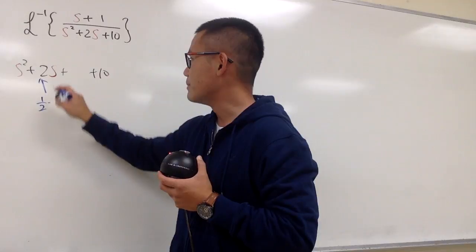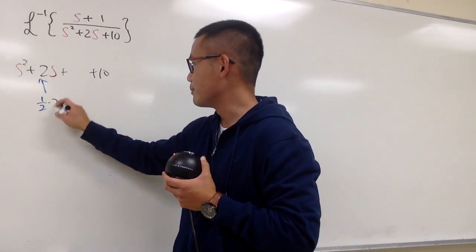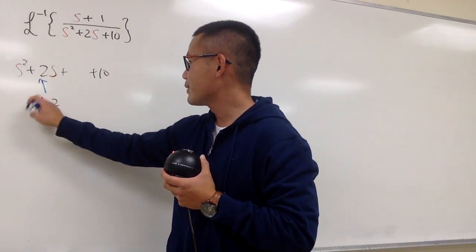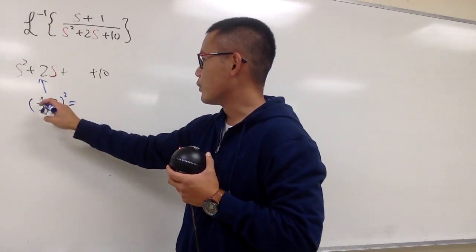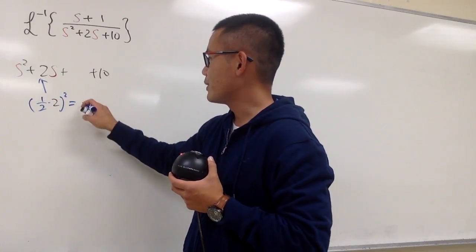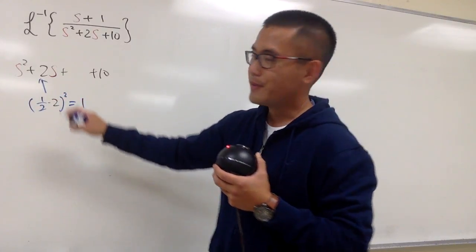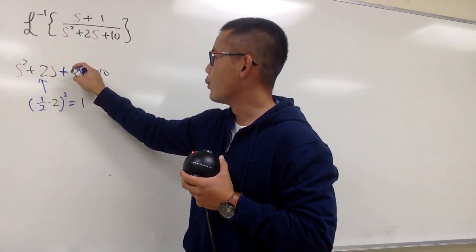And you can just do 1 half times this 2, which is 1, and then you go ahead and square that. So 1 half times 2 is 1 squared, which is 1. So you go ahead and add 1 to it.